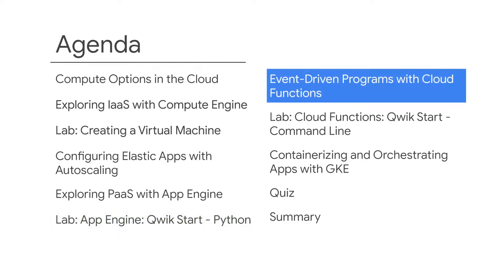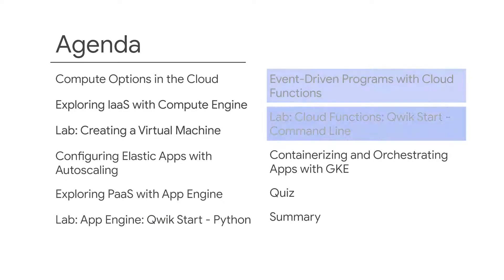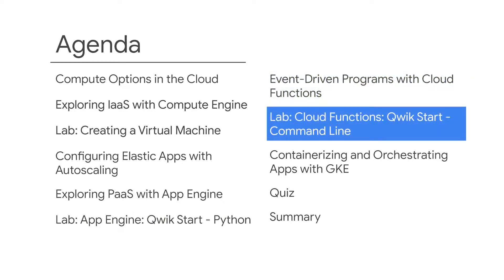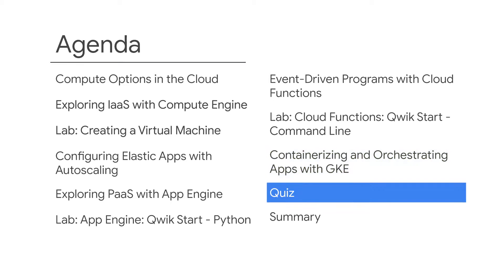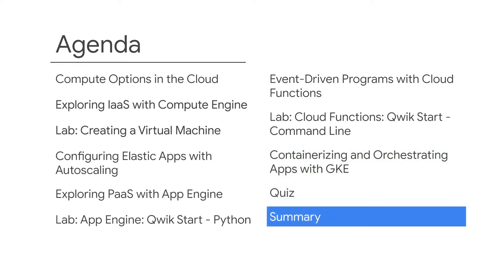You'll then move on to finding out about event-driven programs with Cloud Functions, before completing another lab where you'll create, deploy, and test a Cloud Function using the Google Cloud Shell command line. You'll finish the module learning about containerizing and orchestrating apps with Google Kubernetes Engine, before ending with a short quiz and a recap of the key learning points from the module.